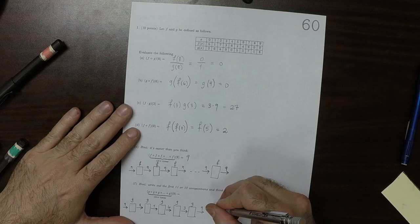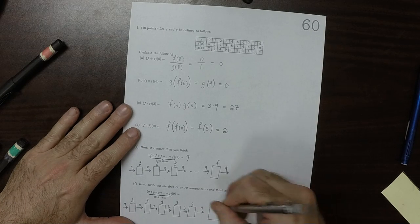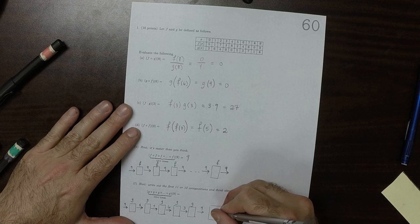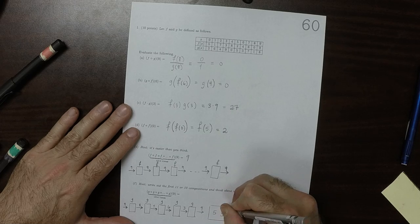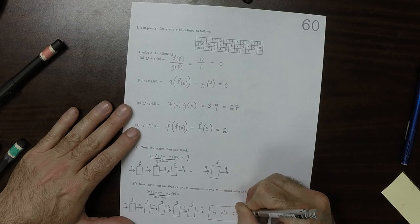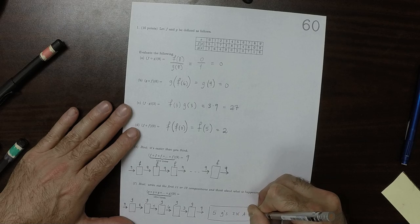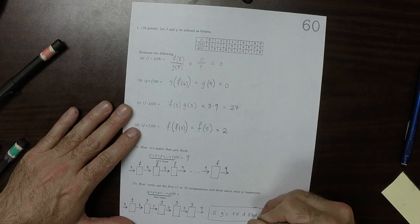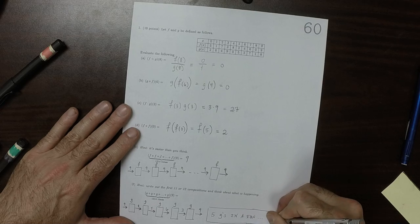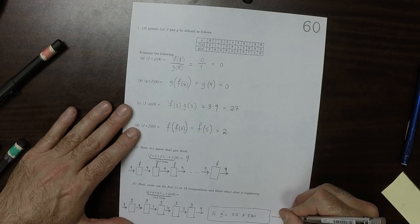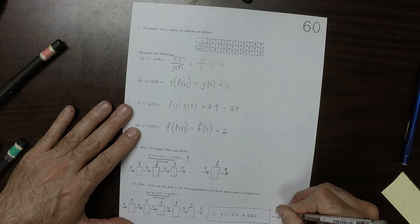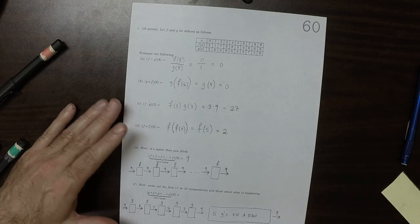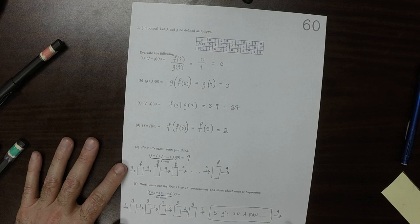So if we put another 5 g's in a row, this also would be a 9. And now that is 10 g's in a row.